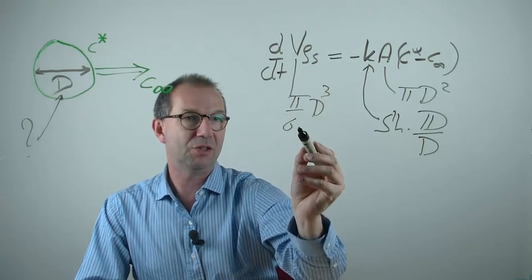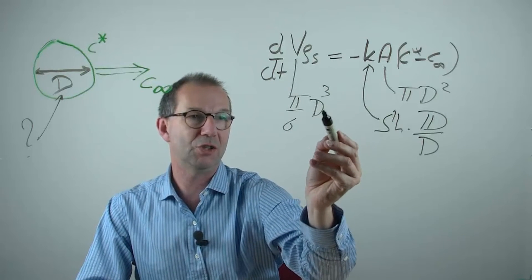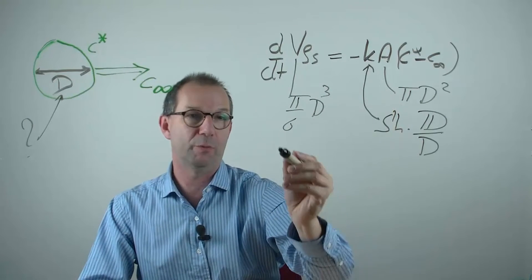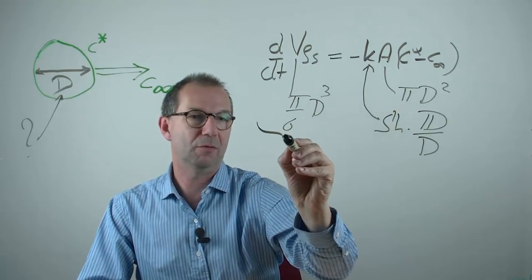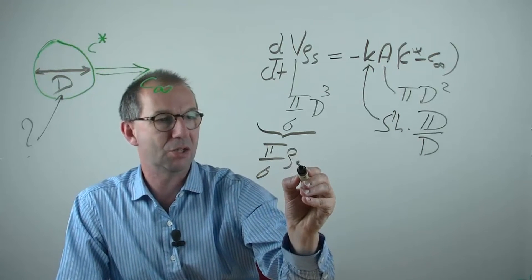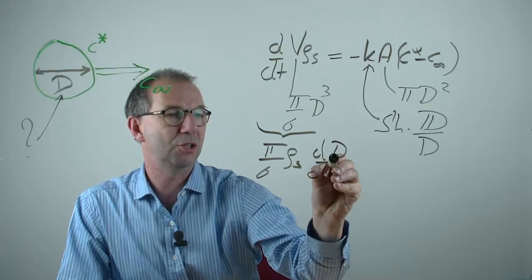Okay, if I look at the time derivative here, basically I need to take the differential of D cubed. Rho S being a constant, pi over 6, obvious constant. So, I can write this as pi over 6 rho sub S and then the time derivative of what is left is D cubed.